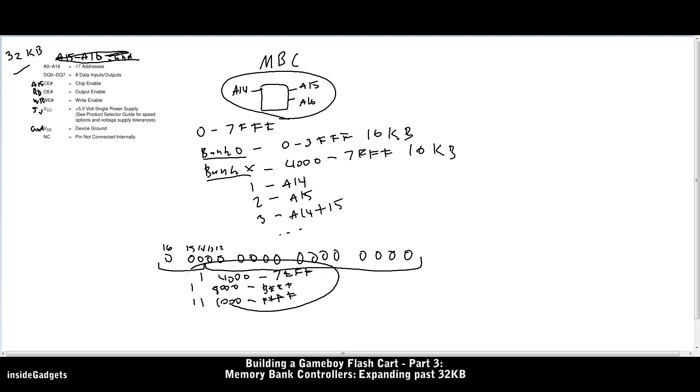And the thing we need to know is that the Gameboy sees none of this happening. It's all happening behind the scenes, so whenever the Gameboy thinks it's reading this 16K bank, it's actually reading any of these that we select via the MBC.